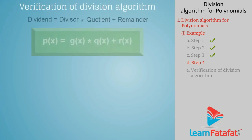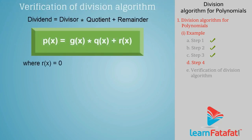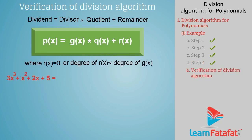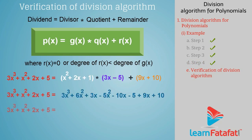Verification of the division algorithm. We know that P of X is equal to G of X into Q of X plus R of X, where R of X is equal to 0, or the degree of R of X is less than the degree of G of X. Putting all the values and solving the equation, we get LHS equal to RHS. Hence, the division algorithm is verified.